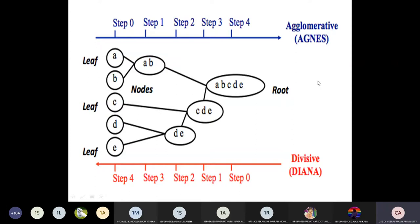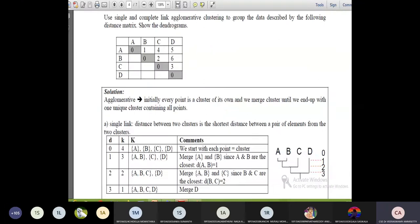Divisive clustering works in reverse order of agglomerative clustering. We start with one group cluster and divide it into multiple sub-clusters step by step until we reach individual elements. This is called divisive clustering.